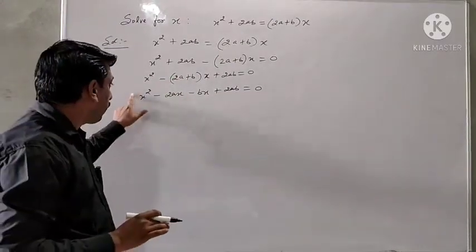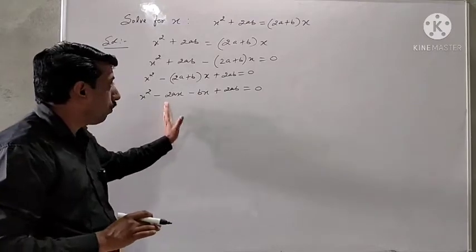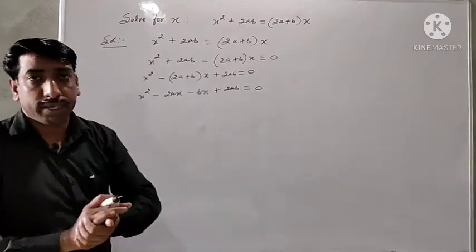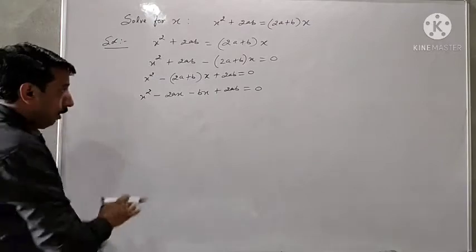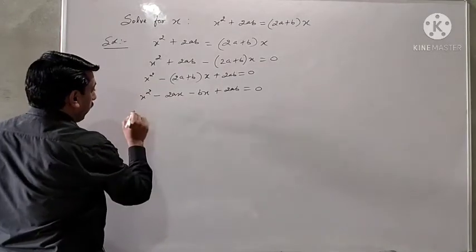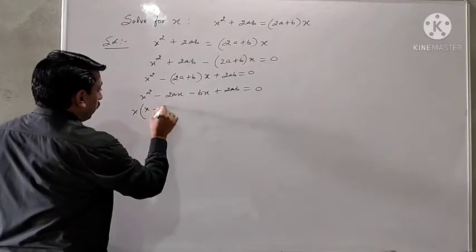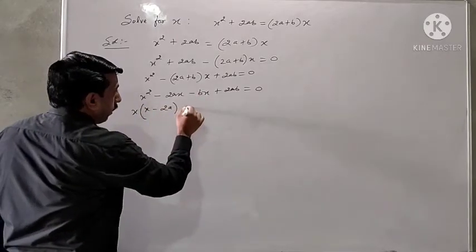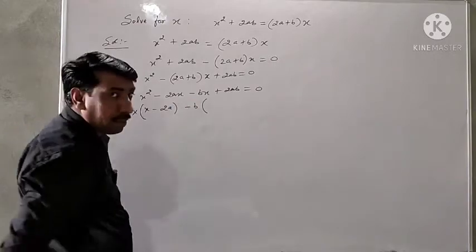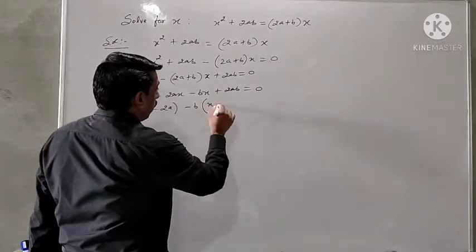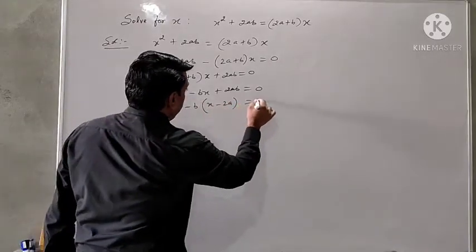We can take out common in first two and in the last two so we can factor it. Look here. In these first two terms, x can be taken out inside x minus 2a. Minus b can be taken out inside x minus 2a.